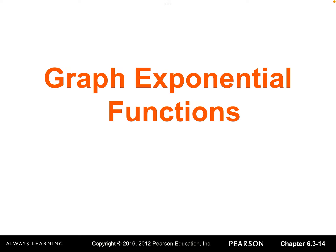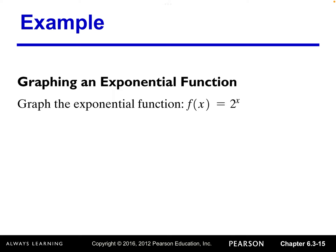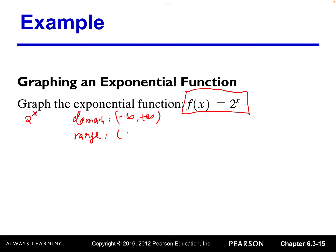Let's see how to graph exponential functions. We'll use f of x equals 2 raised to the x power as an example. There's no restriction for x, so the domain will be all real numbers, from negative infinity to positive infinity — no denominator, no even index roots. As for the range, 2 raised to any exponent is always a positive number, so the range is from 0 to positive infinity.